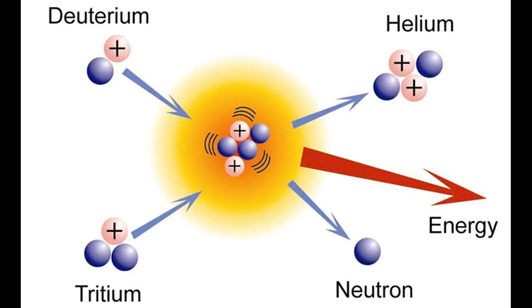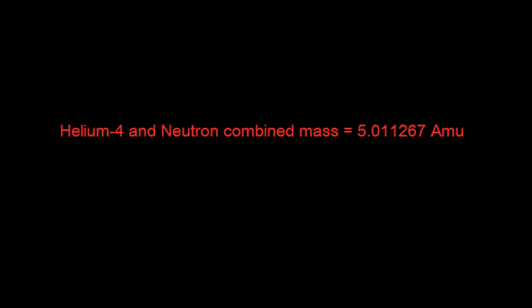Taking this into account, there is a difference in mass before and after the fusion reaction. The combined mass of the deuterium and tritium nuclei is 5.030151 AMU. The combined mass of the helium-4 nuclei and the single neutron is 5.011267 AMU. If you subtract the resulting mass from the original mass, we will see that the difference in AMU is 0.01884.